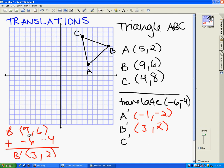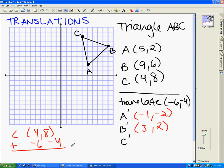And so now we're going to do c prime. c is at 4, 8. And again, we're going to translate it to the left 6 and down 4. And so that means that c prime, 4 plus negative 6 is negative 2. 8 plus negative 4 is positive 4. So c prime is negative 2, 4.